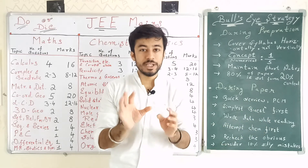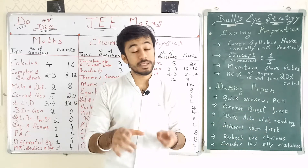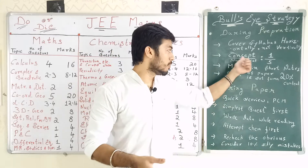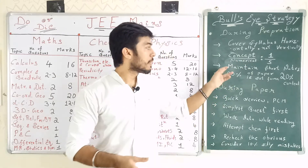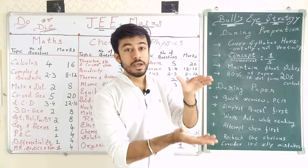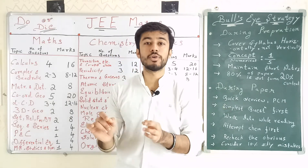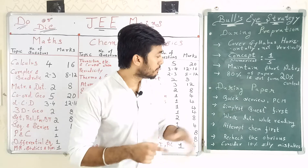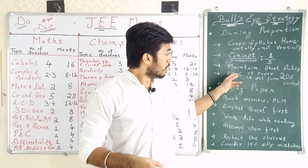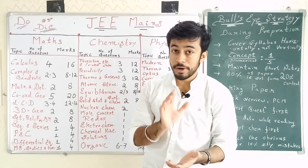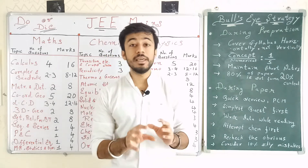The concept-to-numerical ratio should be 1:5 — if you have a concept, you should try at least five different types of numericals. Ideally this ratio should be 1:5. Also, maintain short notes — if a topic is 50 pages, you should have short notes of 5 pages so that you can revise it quickly at any time.